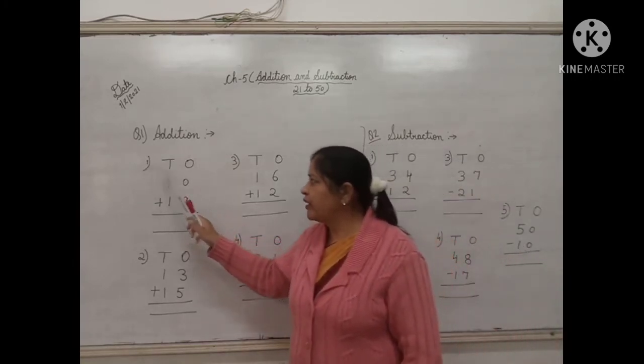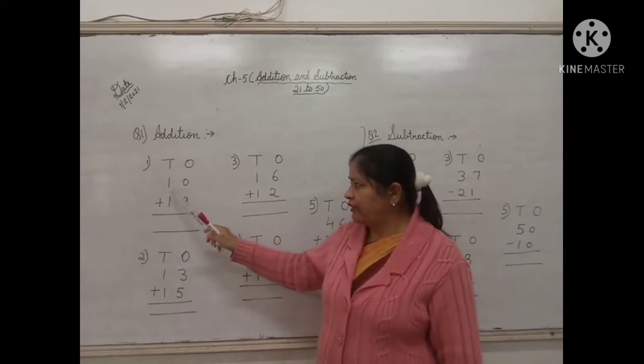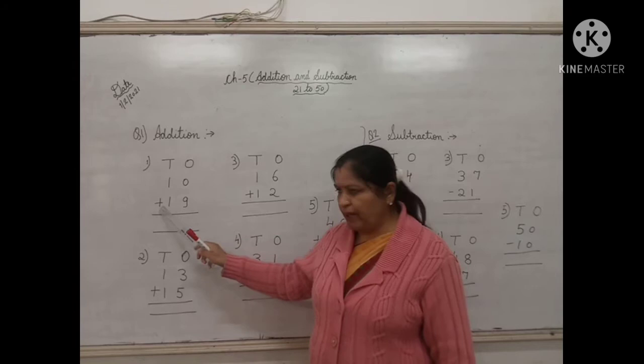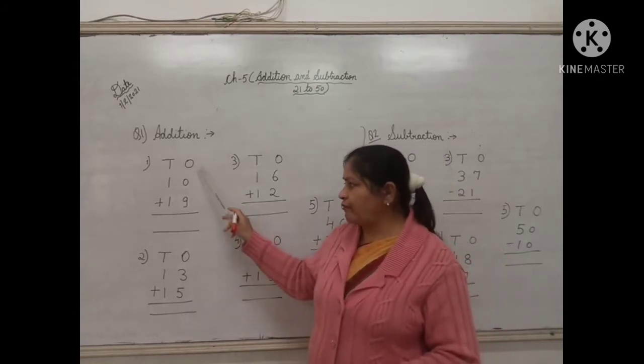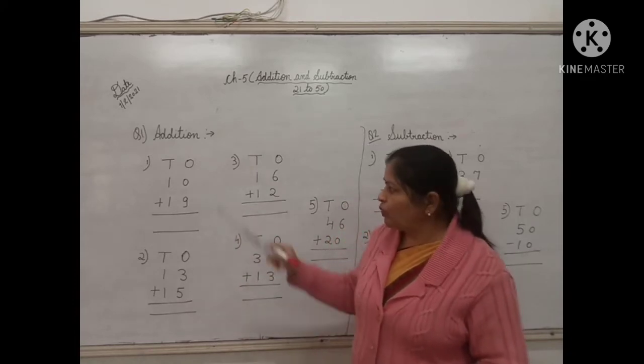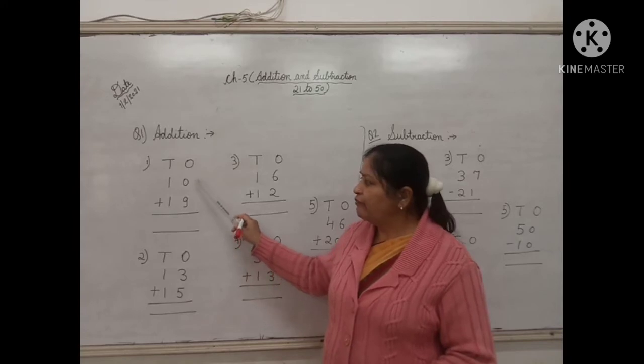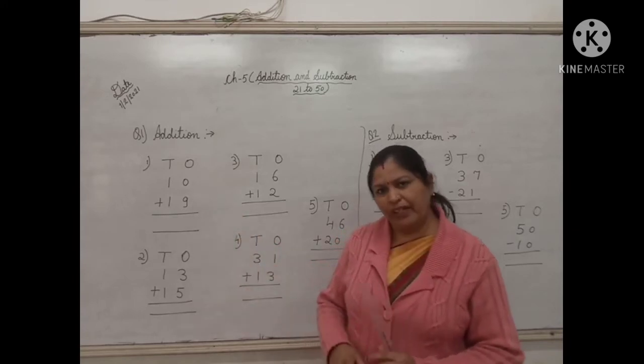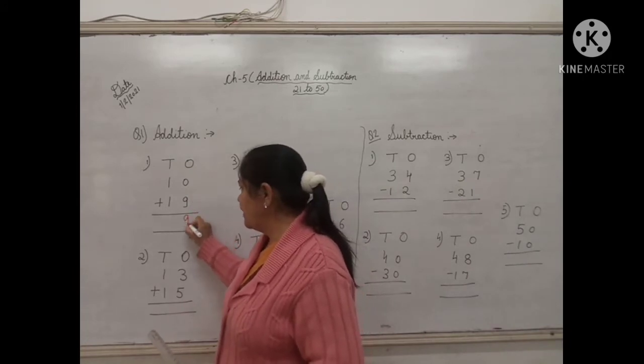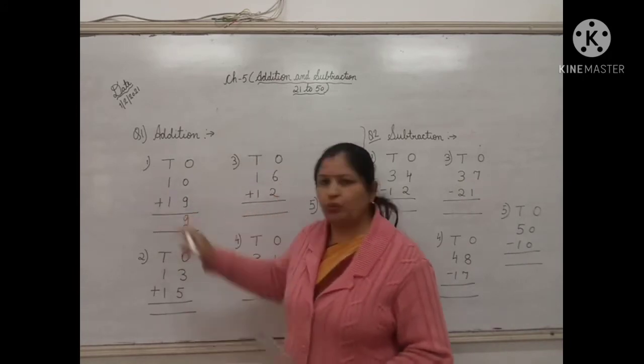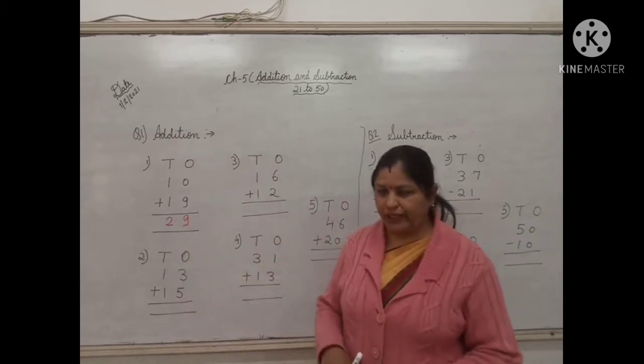The first sum, there is tens and ones. The number is 10 plus 90. Children, whenever we have to do addition, always we will start from the ones digit. So in the ones digit, the number is 0 and 9. If we add 0 and 9, the answer will be 9. So 0 plus 9 will be 9. 1 plus 1 will be 2. So the answer is 29.